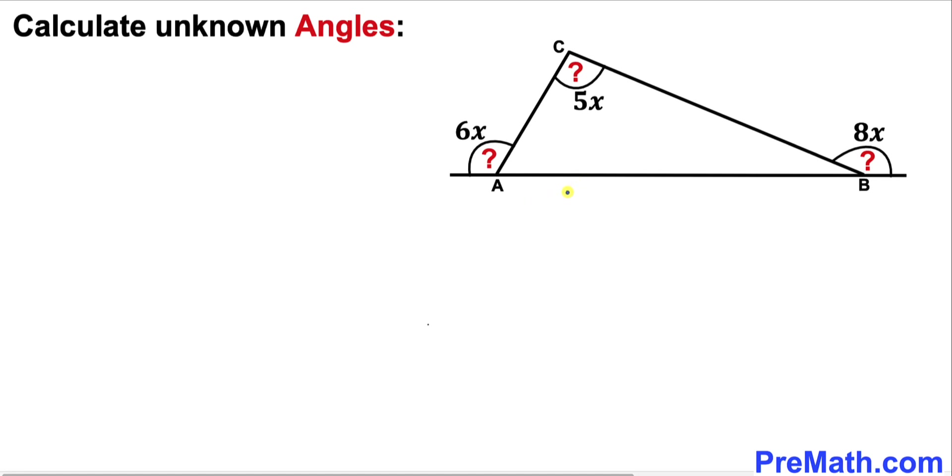Welcome to PreMath. We have got this triangle ABC such that our given angles are 6x, 5x, and 8x.